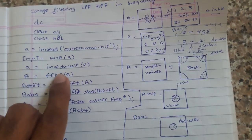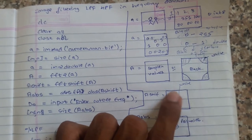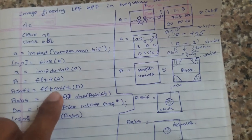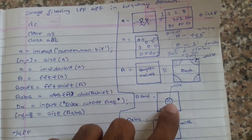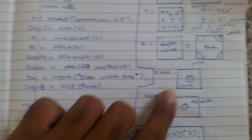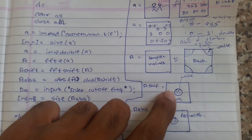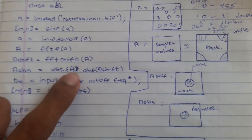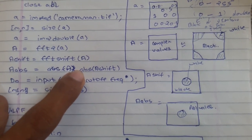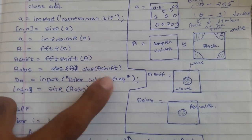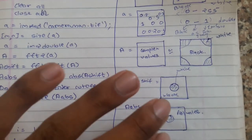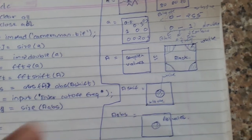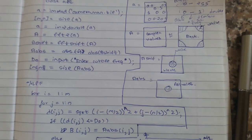Next we will have to shift. When you do FFT2, the data is at the corners, but we want the data to come at the center. For that we use FFTshift, and when you do FFTshift the data comes in the center. Now this will have all complex values, so we want to deal with real values. Hence what we do is take the absolute value — basically the modulus. There is a function ABS. When you take ABS of A shift, you will get real values, and the image will also have white values in the middle and black values around it.